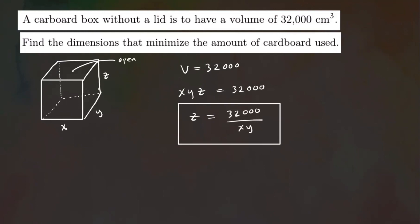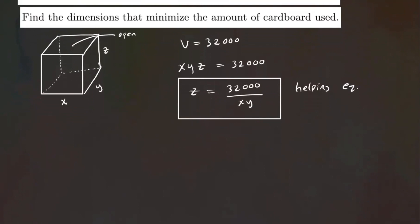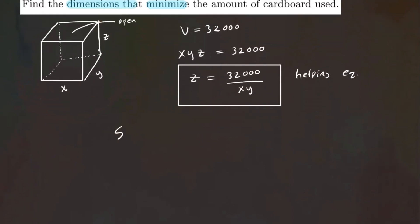We're going to hold on to that until we get our surface area — this is going to be your helping equation, or constraint equation, for the function we're going to optimize. In this case, we're going to minimize the surface area function. We want to find the dimensions that will minimize the amount of cardboard used, so we need the area of each surface except for the top.